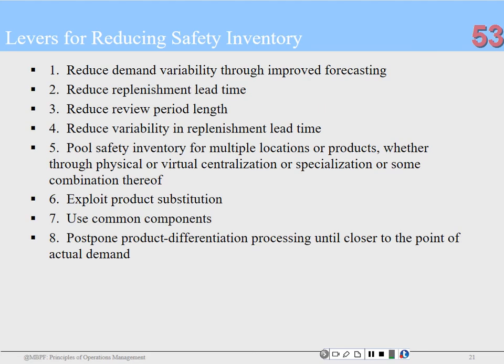Levers for reducing safety inventory: reduce demand variability by improving forecasting; reduce replenishment lead time; reduce the review period — instead of weekly, maybe twice a week; reduce variability in replenishment lead time; pool safety inventory from multiple locations; exploit product substitution. At Pella, if we ran out of a particular screw, we had another we could use. Can you use common components? That's something we really got to from a design standpoint.